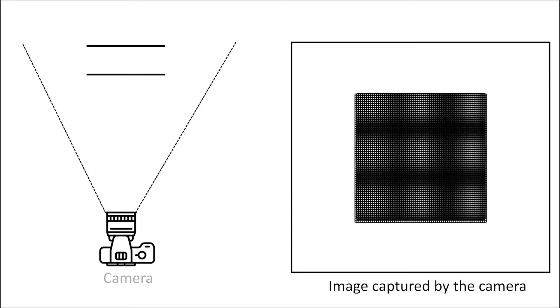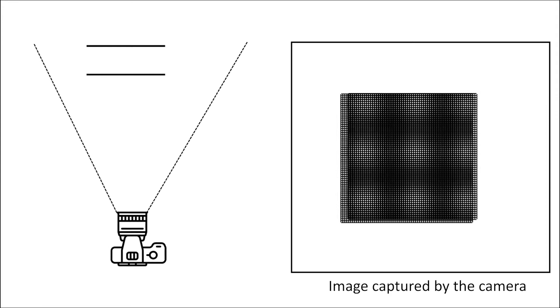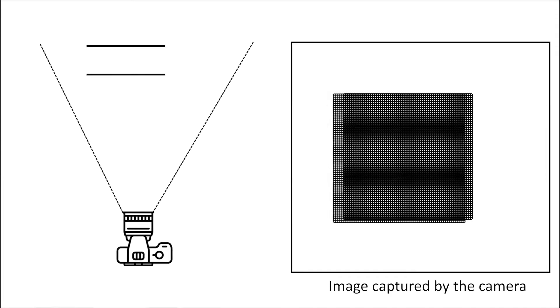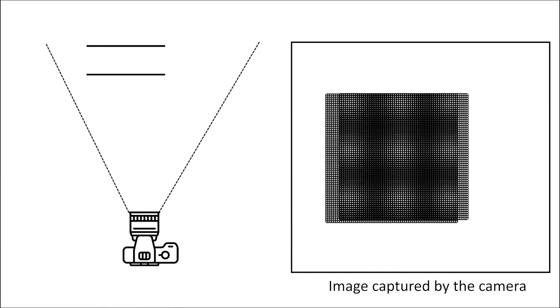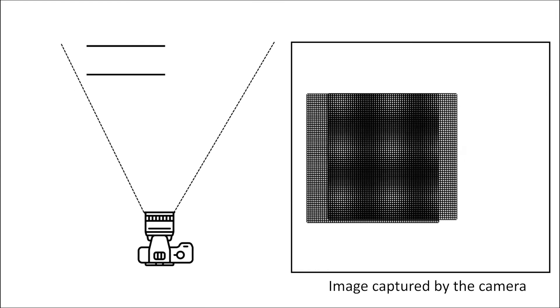When the camera moves subtly, the projection of the two grids move at different speeds in the image space, so the Moray pattern also changes. This suggests we can determine the camera location by analyzing the Moray pattern.